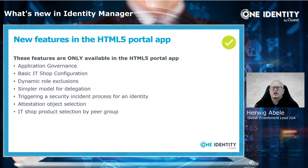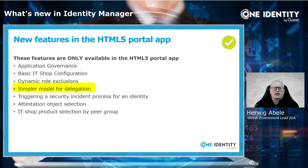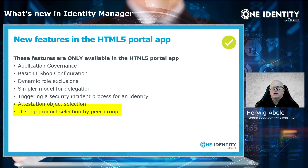Now let's look at the new features implemented only in the new world. There is application governance — new functionality in 8.2 — available as part of the new standard web front end. Basic IT shop configuration is for the first time available in the new standard web portal, meaning you can now configure your IT shop in the web. Exclusions from dynamic roles are possible but only in the new standard portal. A simpler delegation model is also implemented, as is triggering a security incident process for identities. Also available is a new way to detect attestation objects via spot-check selection, and a very nice feature to select IT shop products by peer groups.